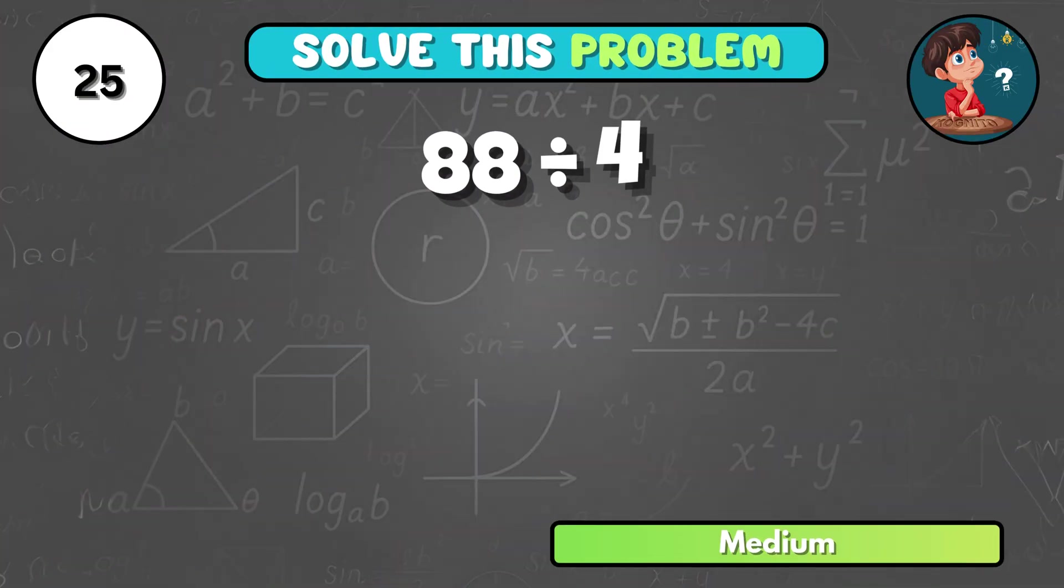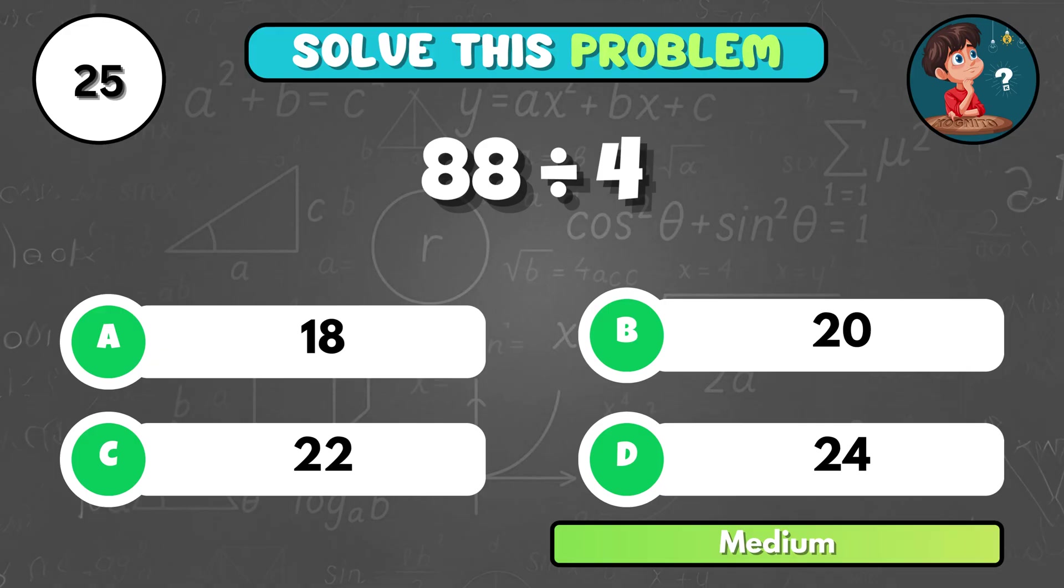If you divide 88 by 4, what do you get? That's C, 22.